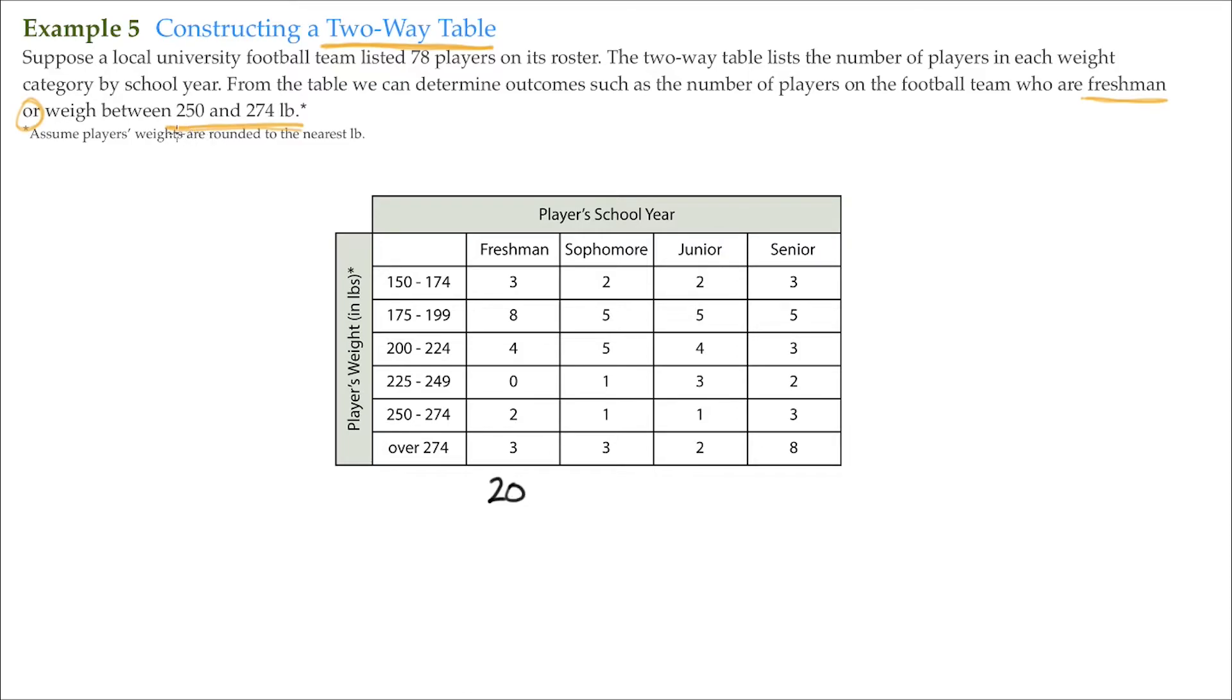We also want to know those that are between 250 and 274 pounds. That's this row right here. 2 of them are freshmen, 1's a sophomore, 1's a junior, 3 are seniors. So there is 7.